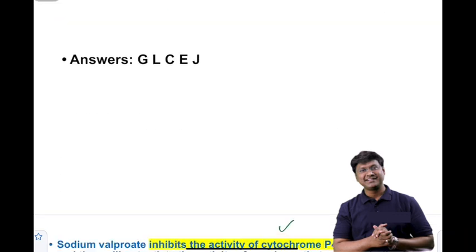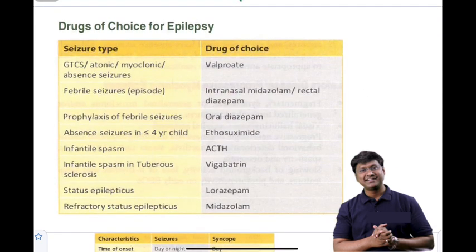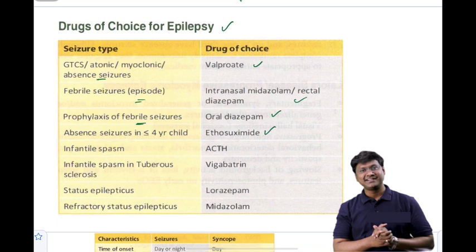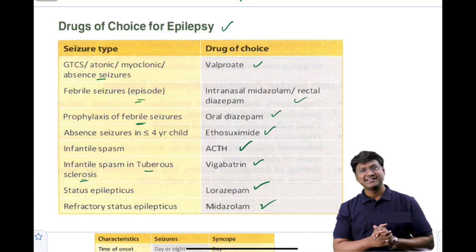Summary of drug of choice for various epilepsy types: valproic acid is the drug of choice for generalized tonic-clonic seizures, atonic seizures, myoclonic jerks, juvenile myoclonic epilepsy, and absence seizures. For febrile seizures during the episode, give intranasal midazolam or rectal diazepam; for prophylaxis, give oral diazepam. Absence seizures under 4 years: ethosuximide; over 4 years: valproic acid. Infantile spasms: ACTH is drug of choice; in tuberous sclerosis: vigabatrin. Status epilepticus: lorazepam; refractory status epilepticus: midazolam.